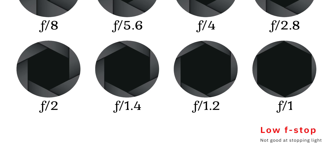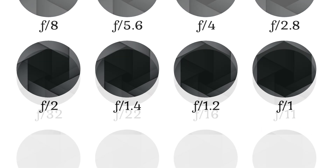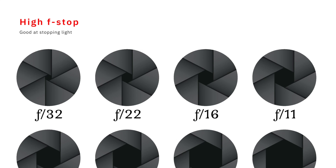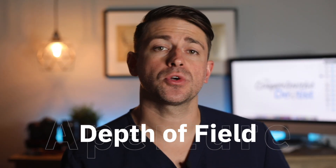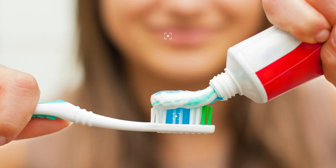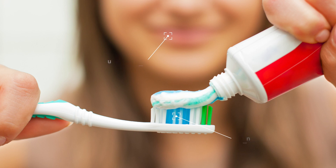F-stops may seem a little counterintuitive — I like to think of the f-stop as how good the aperture is at stopping light from entering the camera. With this line of thinking, a small f-stop would mean it is not very good at stopping light and allows a lot of light in, and a high f-stop would imply that it is very good at stopping light and allows very little light into the camera. Aperture also affects the depth of field in the image, or how much of the image is in focus from front to back. We will talk more about depth of field when we discuss focus in a future video.